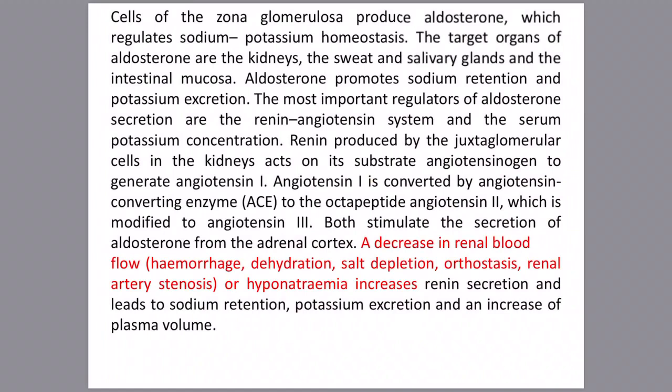The most important regulator of aldosterone secretion is the renin-angiotensin system, activated initially in the macula densa with subsequent conversion of angiotensin to its active form, angiotensin II. The triggering agent for aldosterone secretion is a decrease in renal blood flow resulting from hemorrhage, dehydration, salt depletion, orthostasis, renal artery stenosis, or hyponatremia.